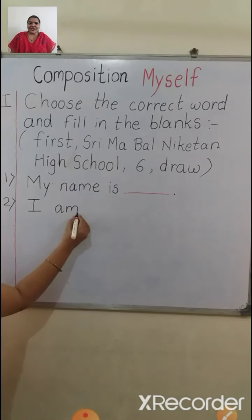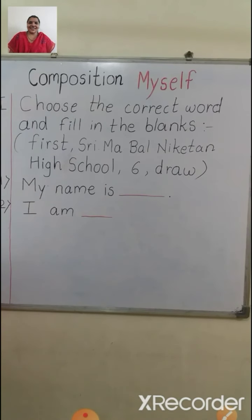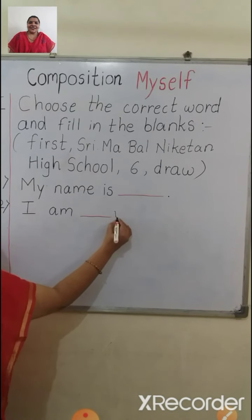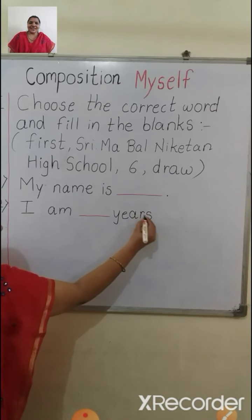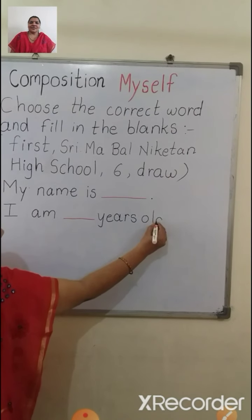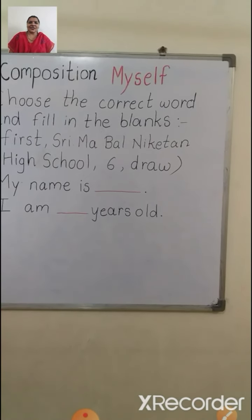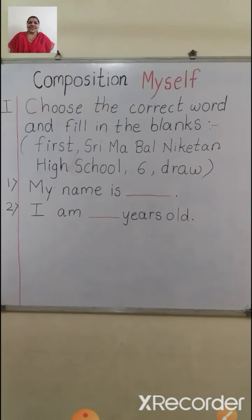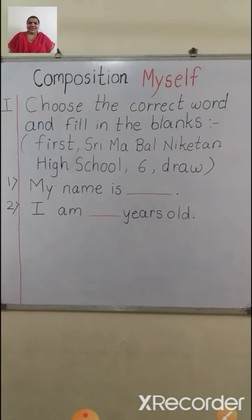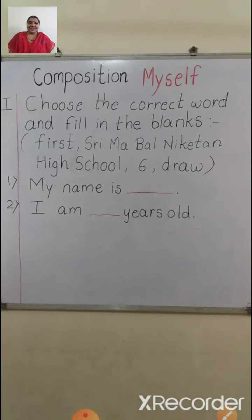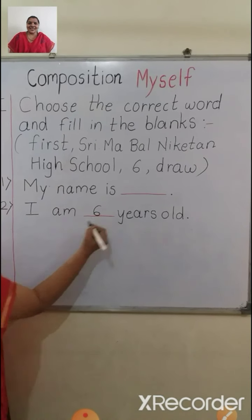How old are you children? I know you all are 6 years old. In the last period, I had explained you about your age. So in this blank, 'I am ___ years old' — what will come here? See the help box and choose the correct option. Who will answer? Yes — 6. I am 6 years old. Very good children.